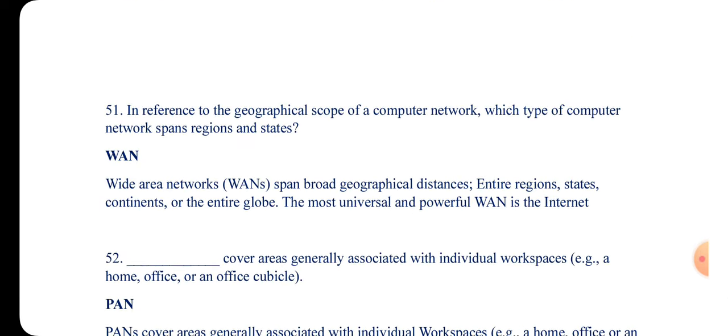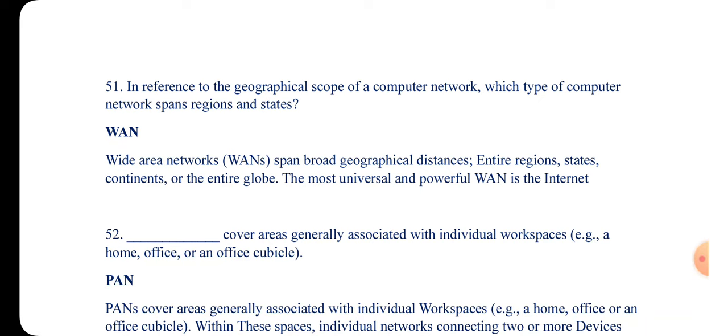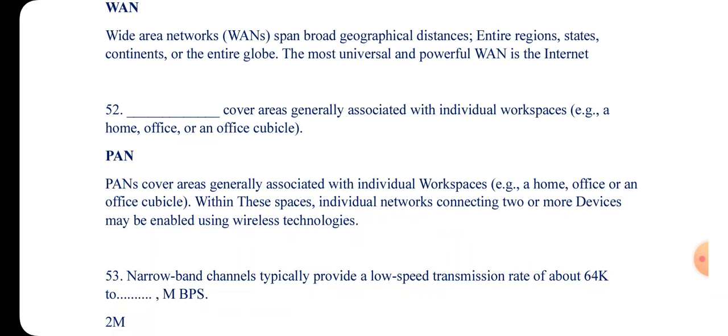Question 51: In reference to the geographical scope of a computer network, which type of computer network spans regions and states? The answer is Wide Area Network — WAN. A wide area network spans broad geographical distances — entire regions, states, continents, and the entire globe. The most universal and powerful example is the internet.